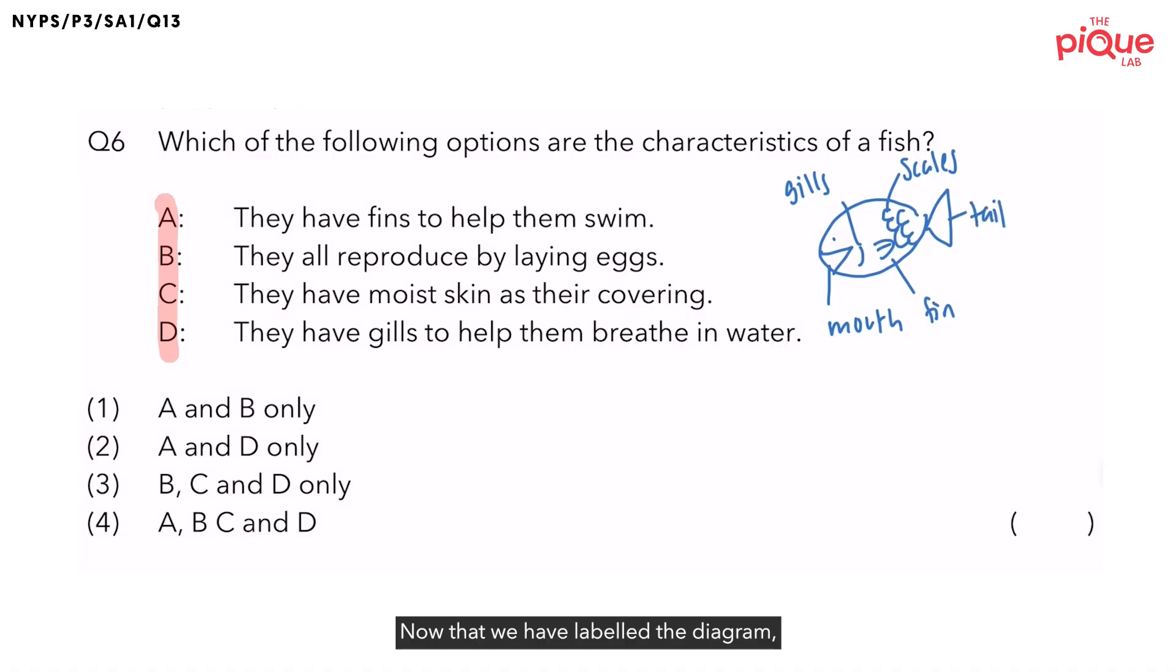Now that we have labeled the diagram, let us discuss the function of these different parts. What is the function of the mouth? The function of the mouth is to allow the fish to eat. What about the gills? The gills allow the fish to breathe in water.